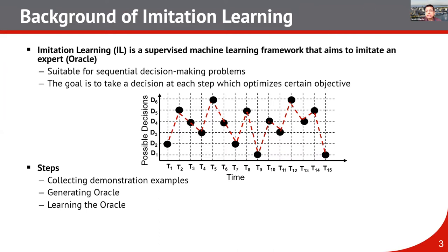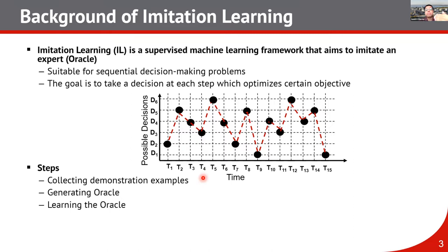Imitation learning is a supervised machine learning framework that aims to imitate an expert or oracle. This kind of learning framework is very suitable for sequential decision making problems, where at each and every time step we have to make some decisions.